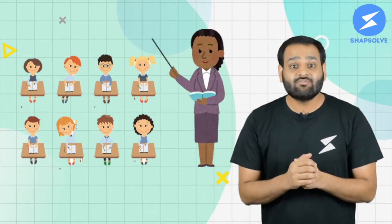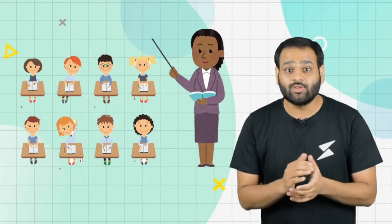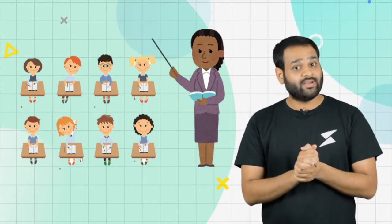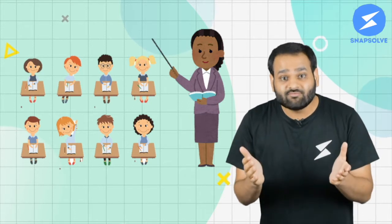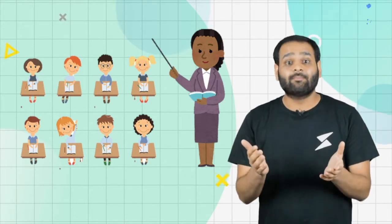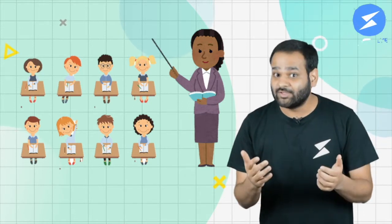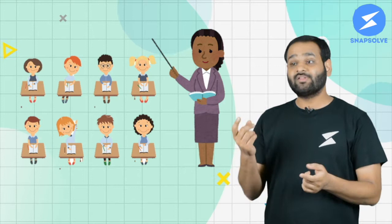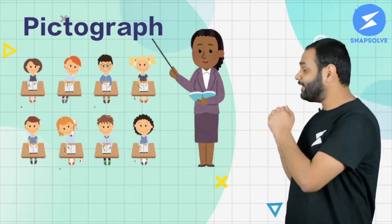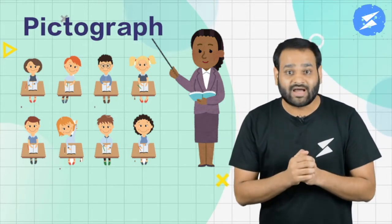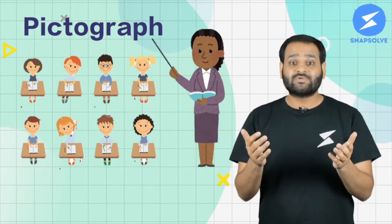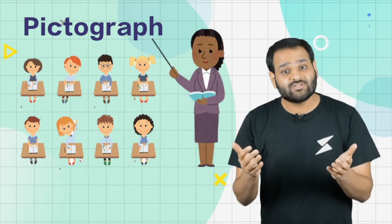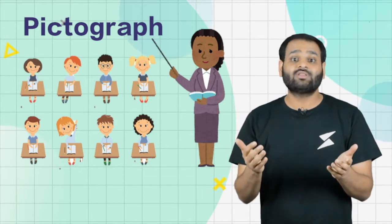The teacher was not able to keep track of it all. How would the teacher show this much information in a better way? Mrs. Matthew came up with the idea of a pictograph. In a pictograph, we use pictures to represent different students and what they want to become.